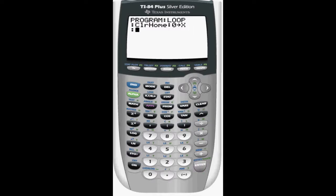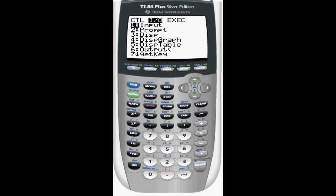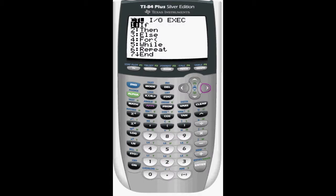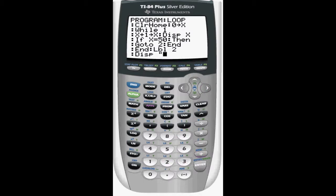That's just the variable I want to use. I'll do an infinite loop, and in that loop I'll have x increase by 1, display x just so you can see that something's actually happening within the loop, and then if x equals 50, then go to label 2 and end that loop. Create my label, and then display end.